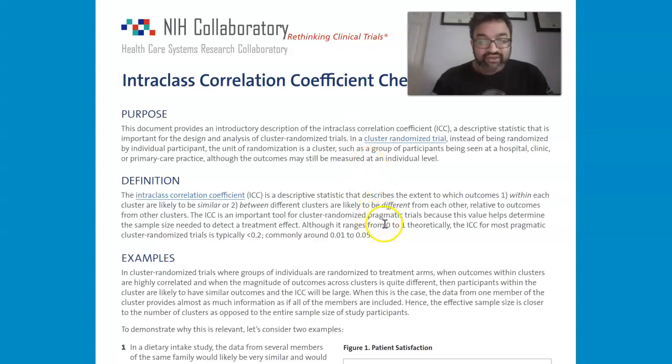So those are the theoretical kind of ranges. But for more pragmatic, most pragmatic cluster randomized trials is typically less than 0.2. So as long as it's around 0.01 to 0.05 of intraclass correlation coefficient, not too similar, then that's better. Because then there's more representation.